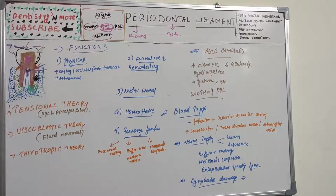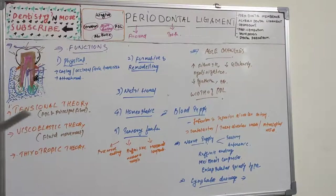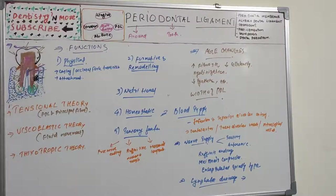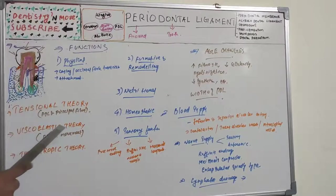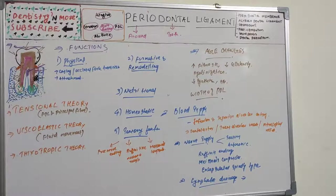There are various theories explaining how force is transmitted to the bone through the periodontal ligament. The first is the tensional theory, the second is the viscoelastic theory, and the third is the thixotropic theory.